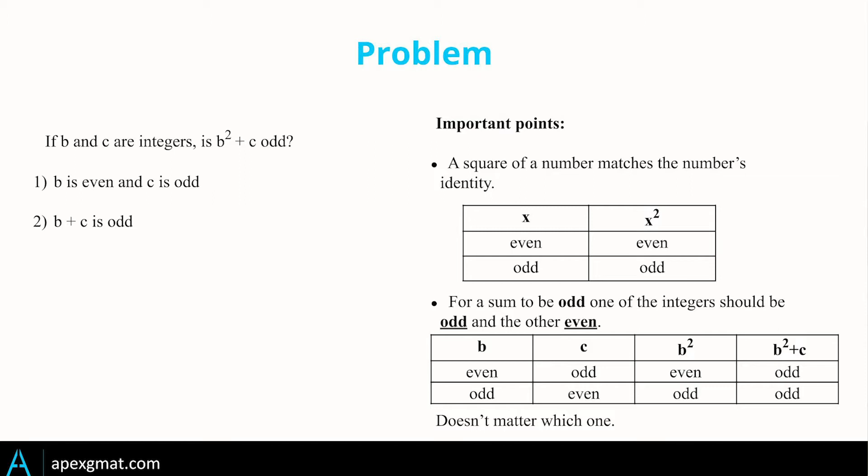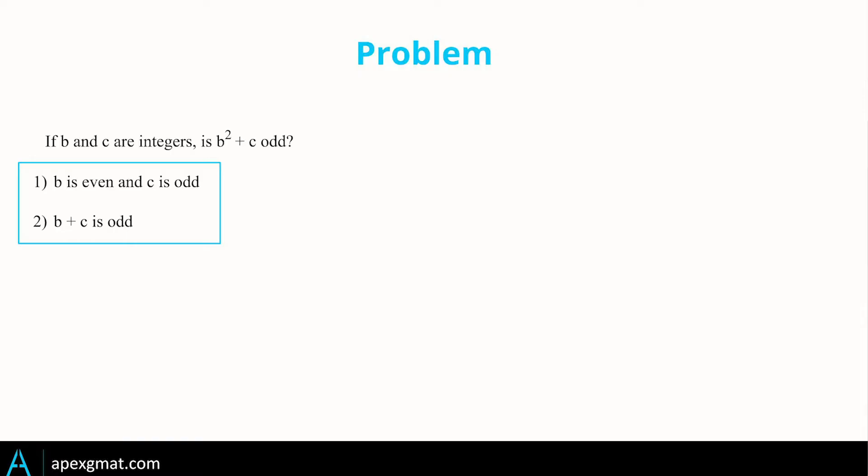But it could go either way, so there are a lot of moving pieces. The easiest thing to do is to say we need to know if each of them is even or odd. Of course, we know the GMAT is not simply going to give us this information directly.